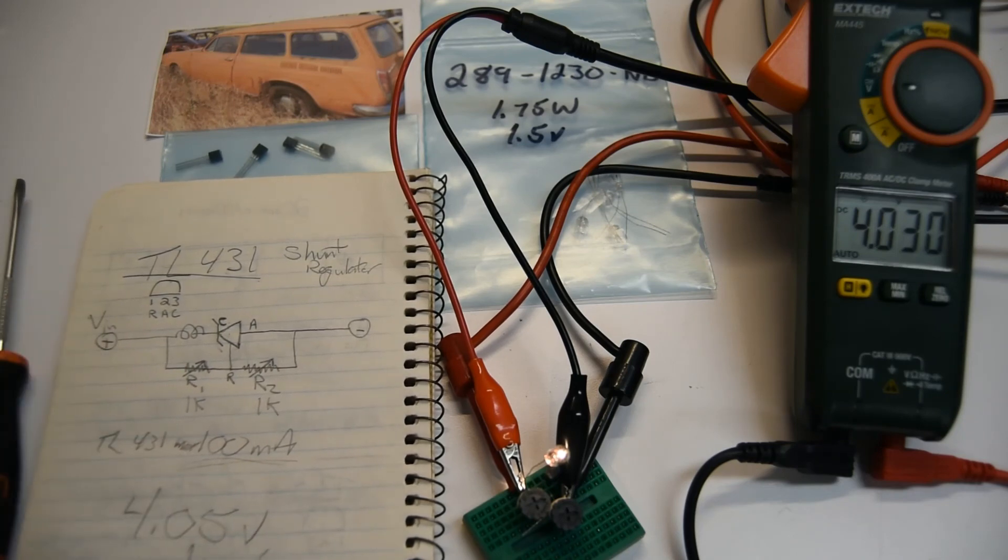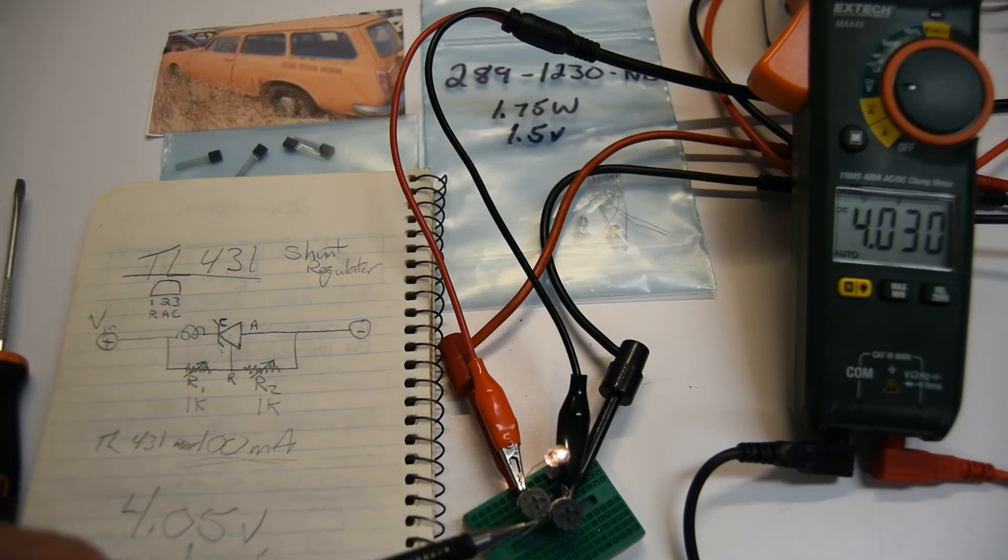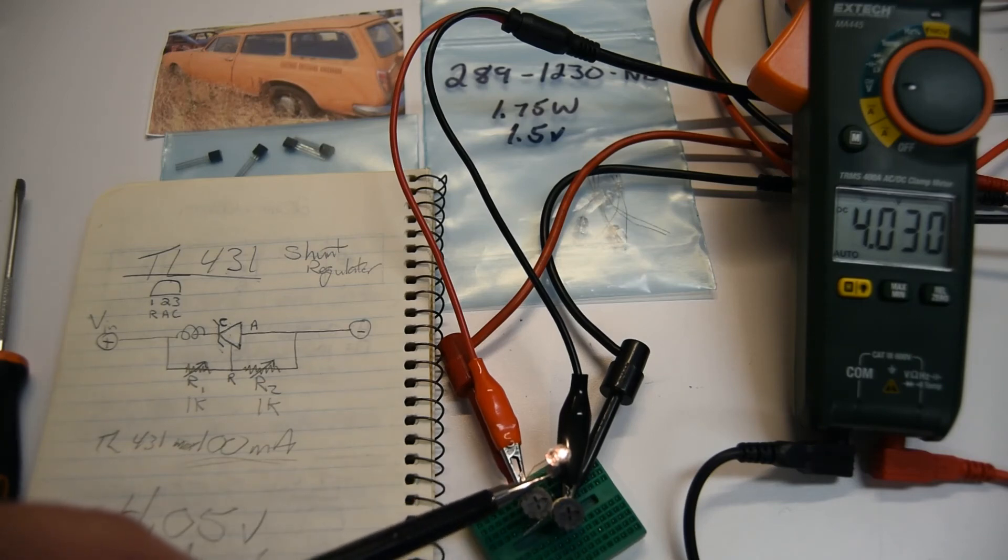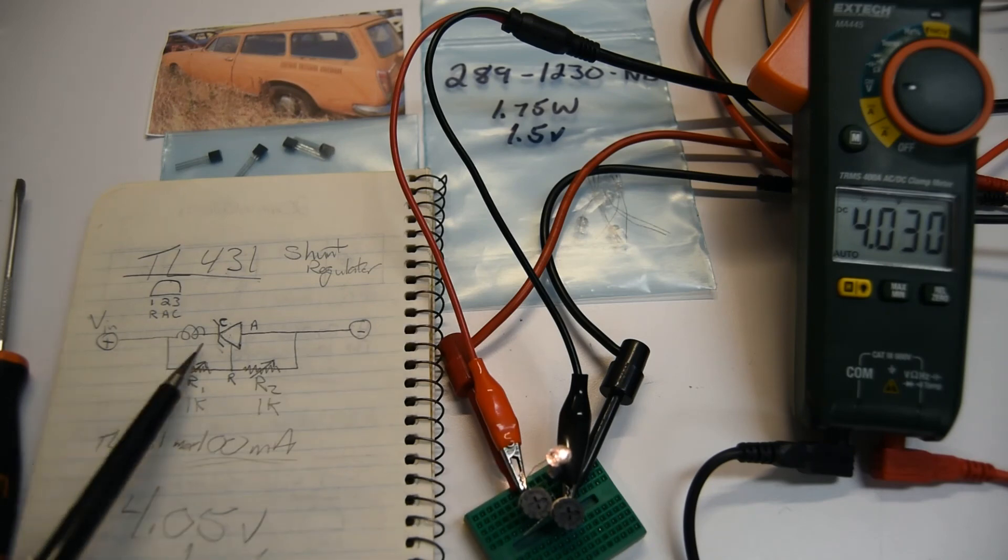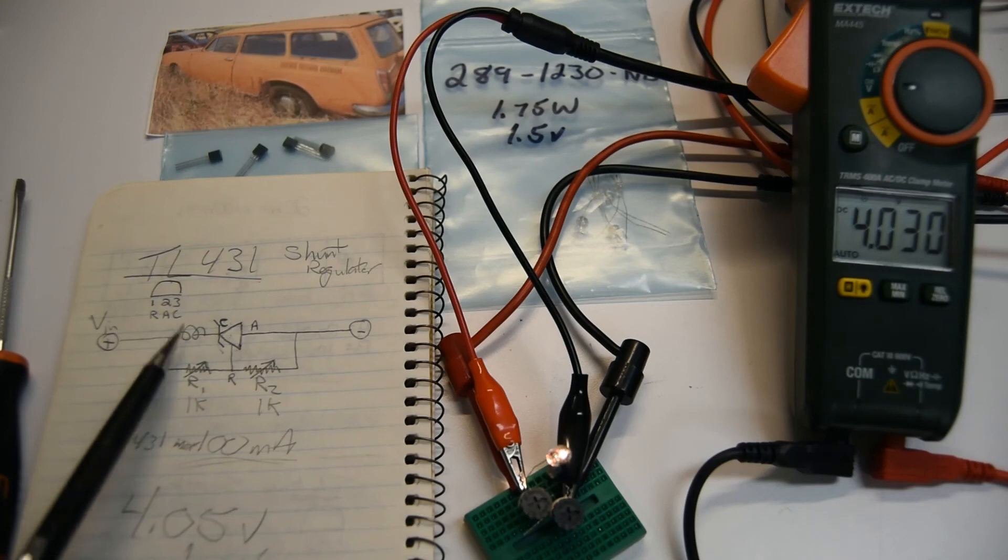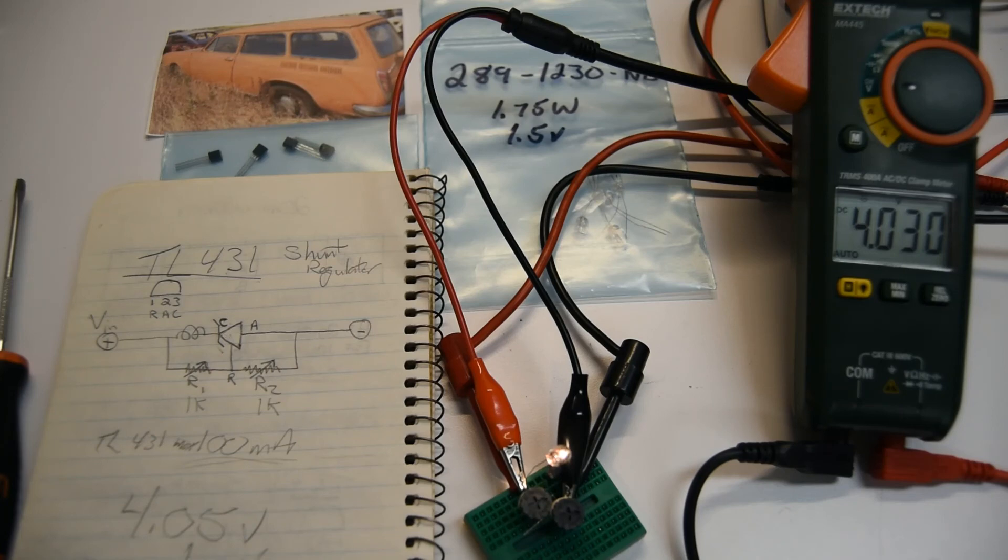So I've got this set for 4.02, 4.03 using two variable resistors and a TL431 and a light bulb as a load, which is my light bulb load right here. Yeah, so that's how I'm going to run my regulators.